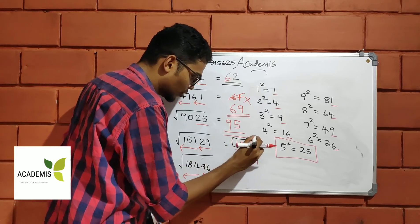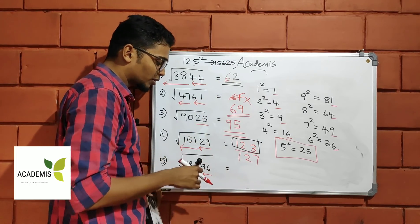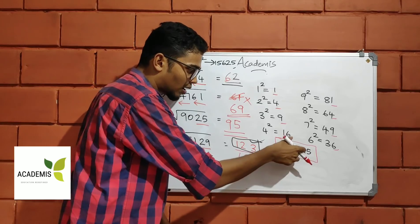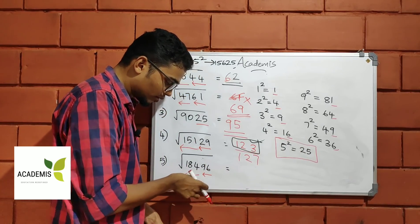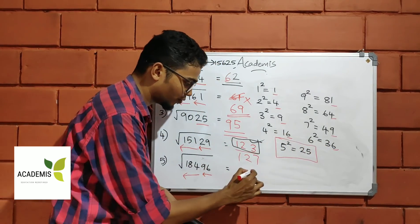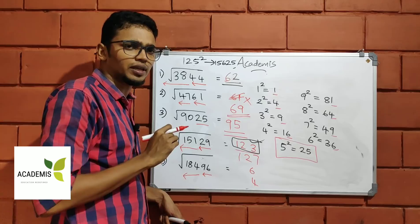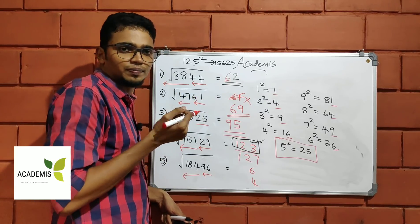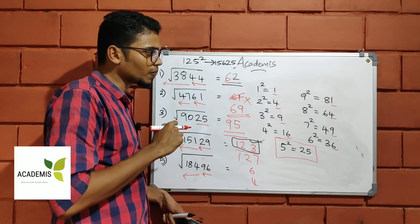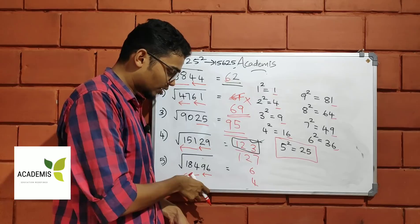I'm going to write everything. 125 squared is 15625. That is 180 divided by 8. This is 90 divided by 8. So the answer is 123. Same logic we have to apply. Either 6 or 4. Either 6 or 4. 184 is a perfect square. 11 squared is 121. 14 squared. So the answer is 3.